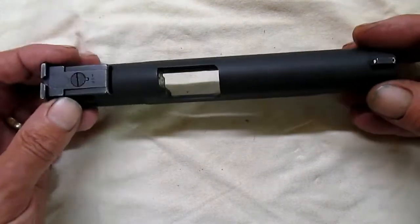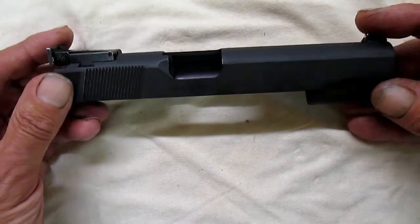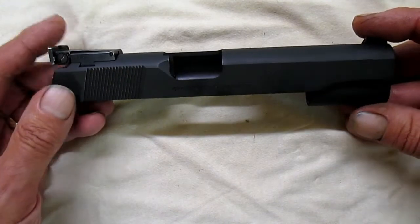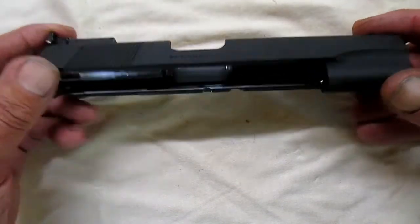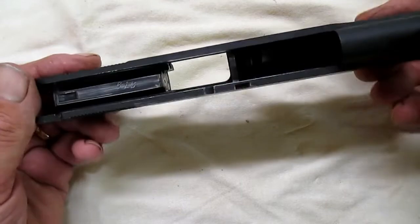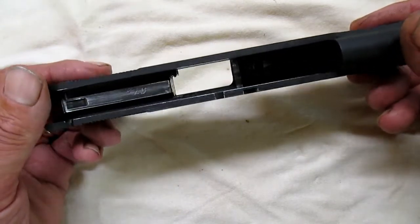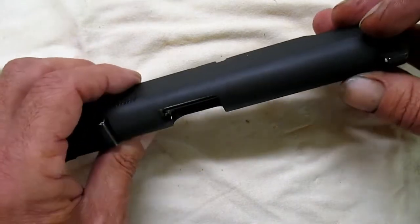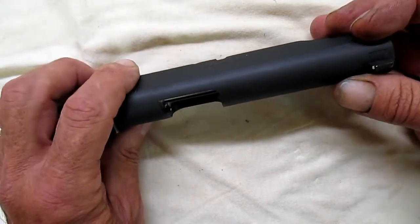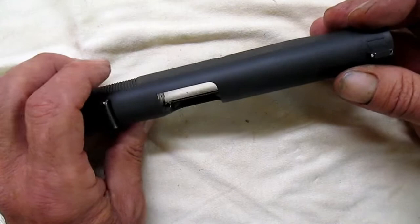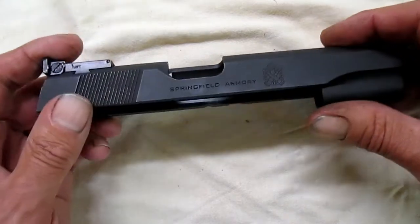This is a slide off of my new 1911 I got earlier this year. I was having some extractor problems with it and I actually found out that the extractor in it was actually short so the hook wasn't going out far enough and catching the rim of the casing. So I just replaced it. I didn't send it back for that.